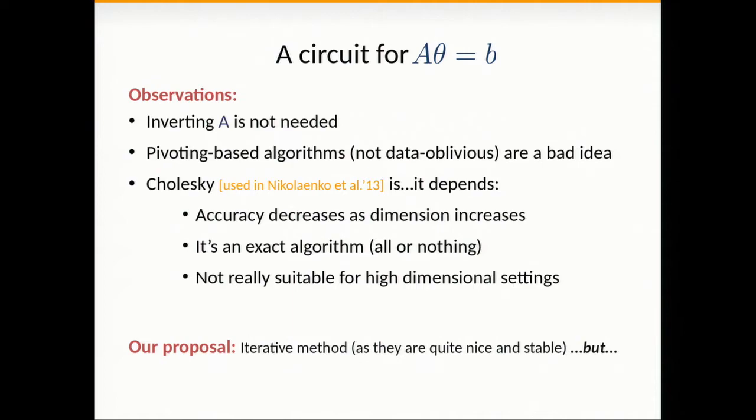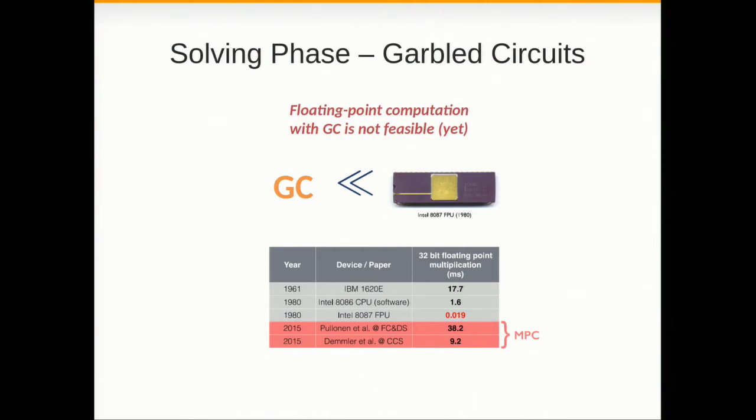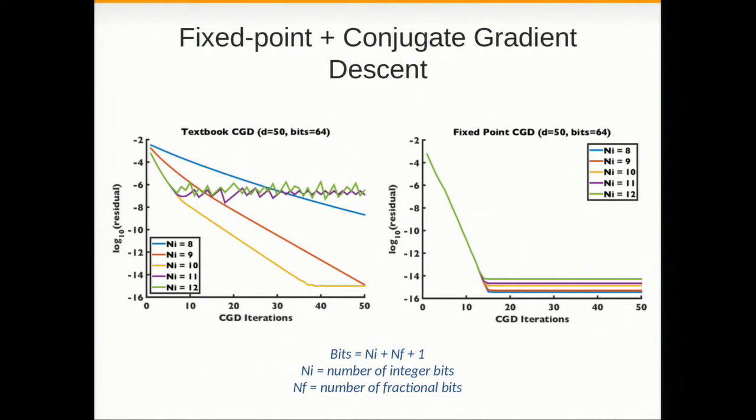The problem is that in garbled circuits we cannot do floating point computations yet. We are not quite there yet. But we are getting there. What happens when you implement textbook CGD using fixed point arithmetic is that you lose the nice convergence properties of the algorithm in floating point.